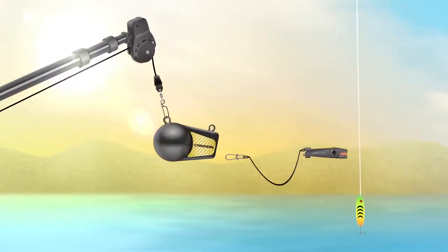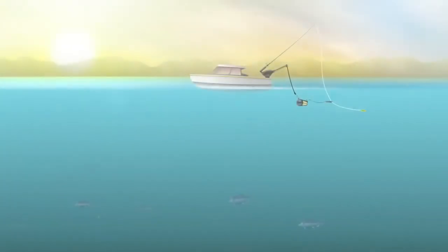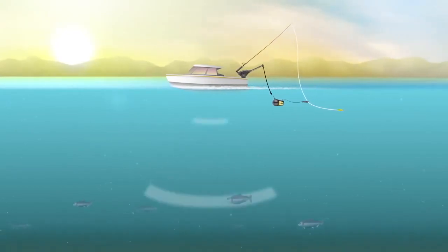Next, you'll use the downrigger to lower the weight and your lure to the right spot. Using your fish finder, identify a depth where the fish are, then use your downrigger to lower your lure to that depth.